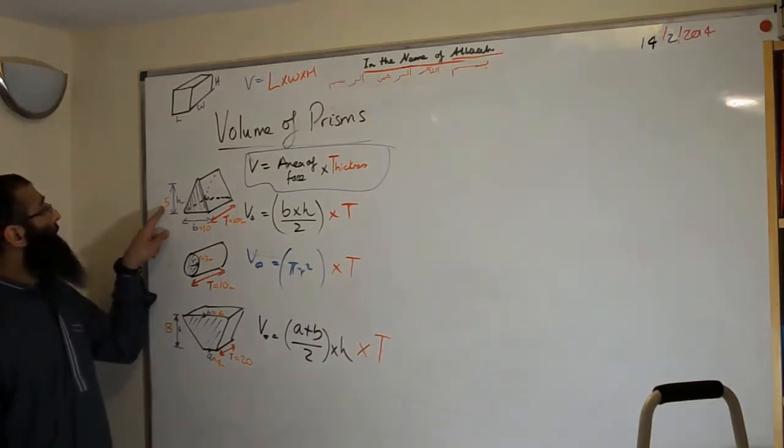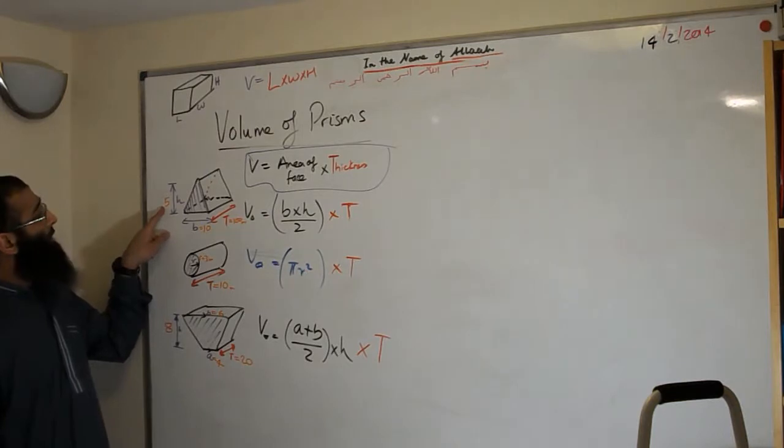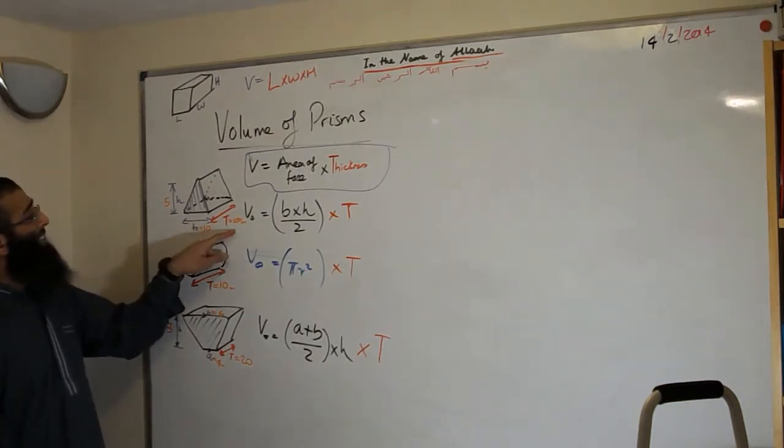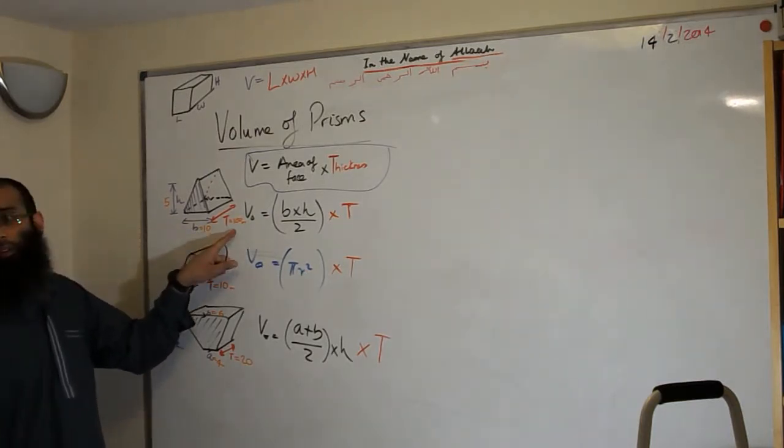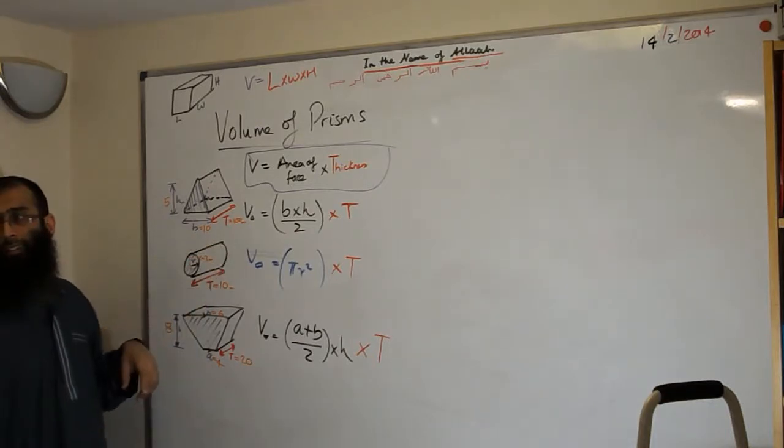So for the triangular prism: the height of the triangle is 5 meters, the base is 10 meters, and the thickness is 100 meters — really a big Toblerone!